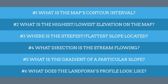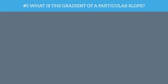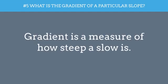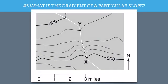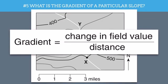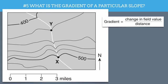What about gradient? Well, when we say gradient, gradient is a measure of how steep a slope is. It's a numerical measure, meaning we can actually calculate is the slope very steep or is it very gradual. So let's look at another map here. And in order to calculate gradient, we need a formula. The formula is change in field value divided by distance. This can be found in the earth science reference tables.